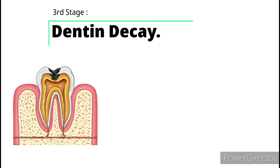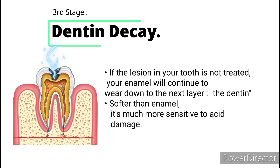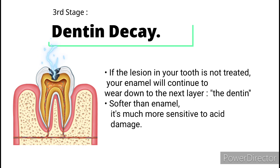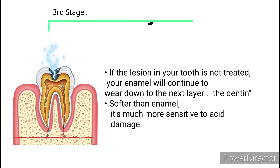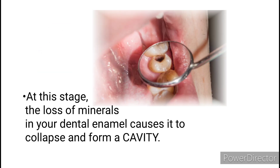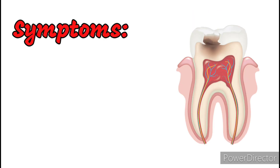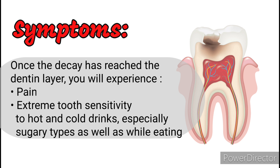Third stage: dentin decay. If the lesion in your tooth is not treated, your enamel will continue to wear down to the next layer — the dentin. Softer than enamel, it's much more sensitive to acid damage. At this stage, the loss of minerals in your dental enamel causes it to collapse and form a cavity.